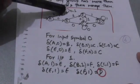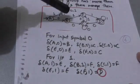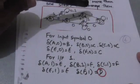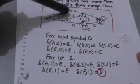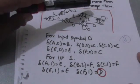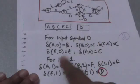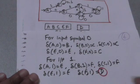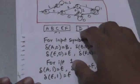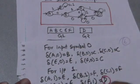For input symbol 1: A transitions to E, B transitions to F, C transitions to F, and E transitions to D. F transitions to D, which belongs to another group G2. The other members of group G1 have transitions to states within group G1. So group G1 has to be divided into two groups, separating F — which transitions to G2 — from the rest.